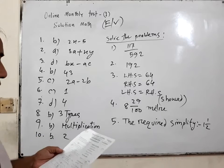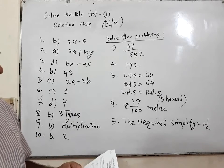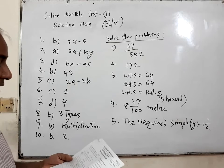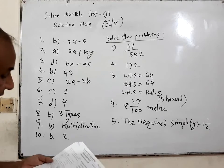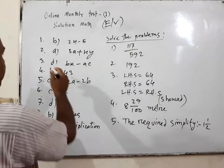And number 3. Which one will be subtracted from the product of B and x? B and x, that means Bx minus ac.